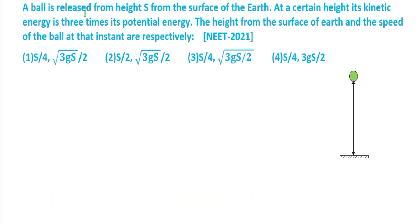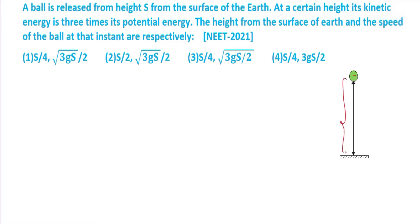Our next question is: a ball is released from height s from the surface of the earth. At a certain height, its kinetic energy is 3 times its potential energy. This ball is released from height s from the surface of the earth. Let us take that certain height as x.